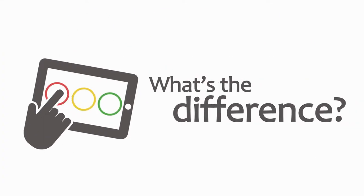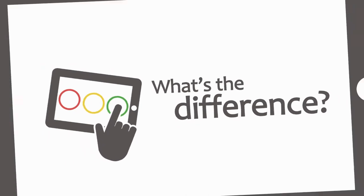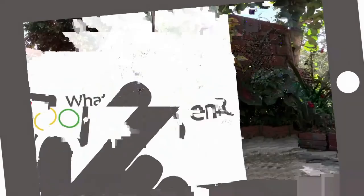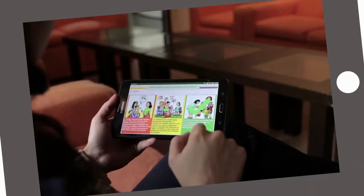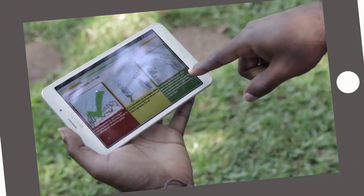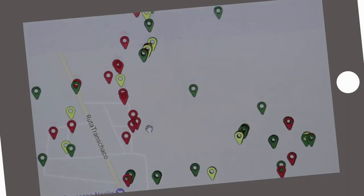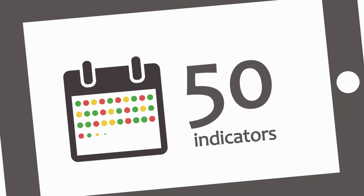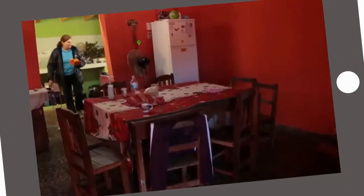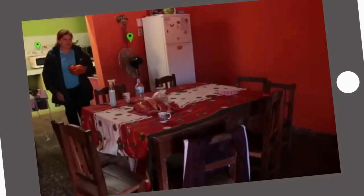So what is the difference between the poverty stoplight and other surveys that address this issue of poverty? The poverty stoplight is not a conventional survey. It is a self-evaluation through which each family, through images and the use of tablets, computers, or cell phones, visualizes their current situation through 50 indicators that permit them to view the multiple dimensions of their poverty, or lack of poverty, like an x-ray.